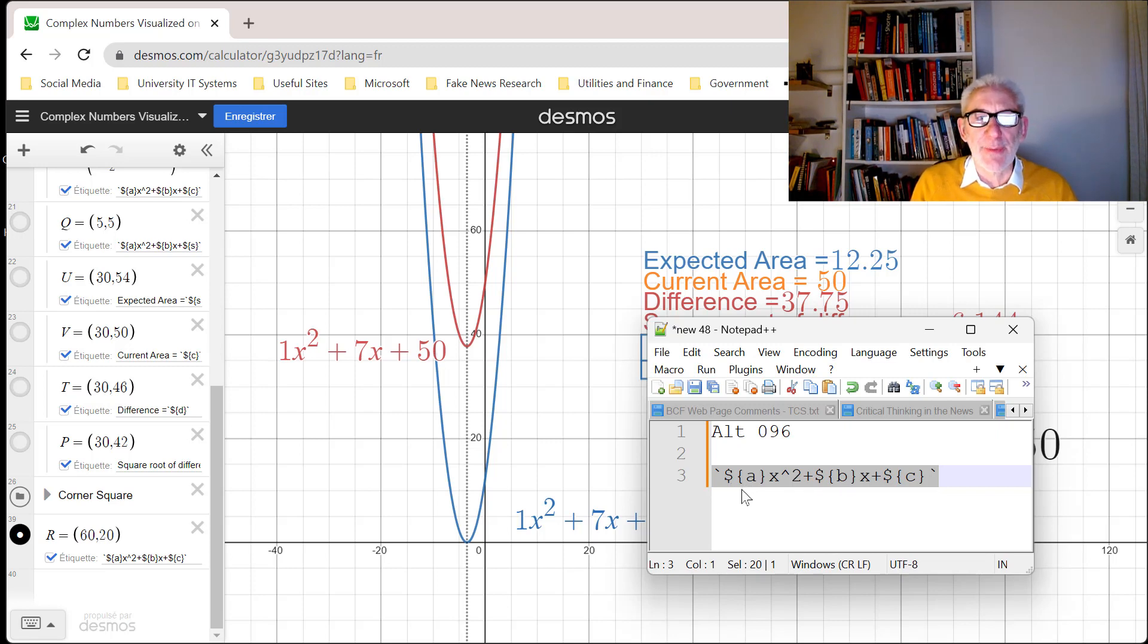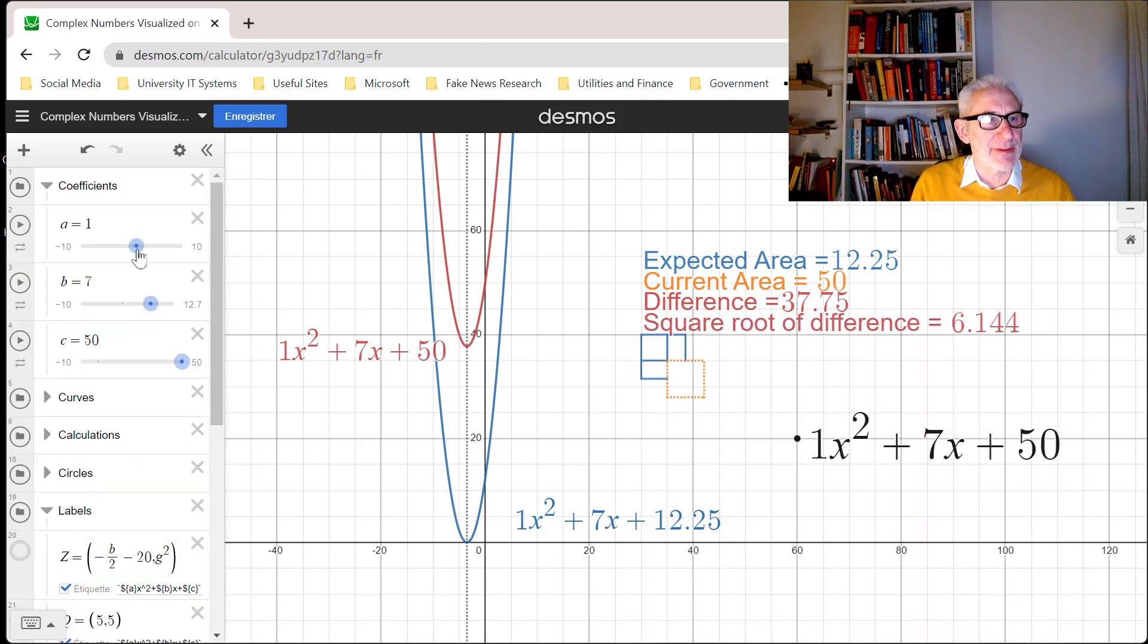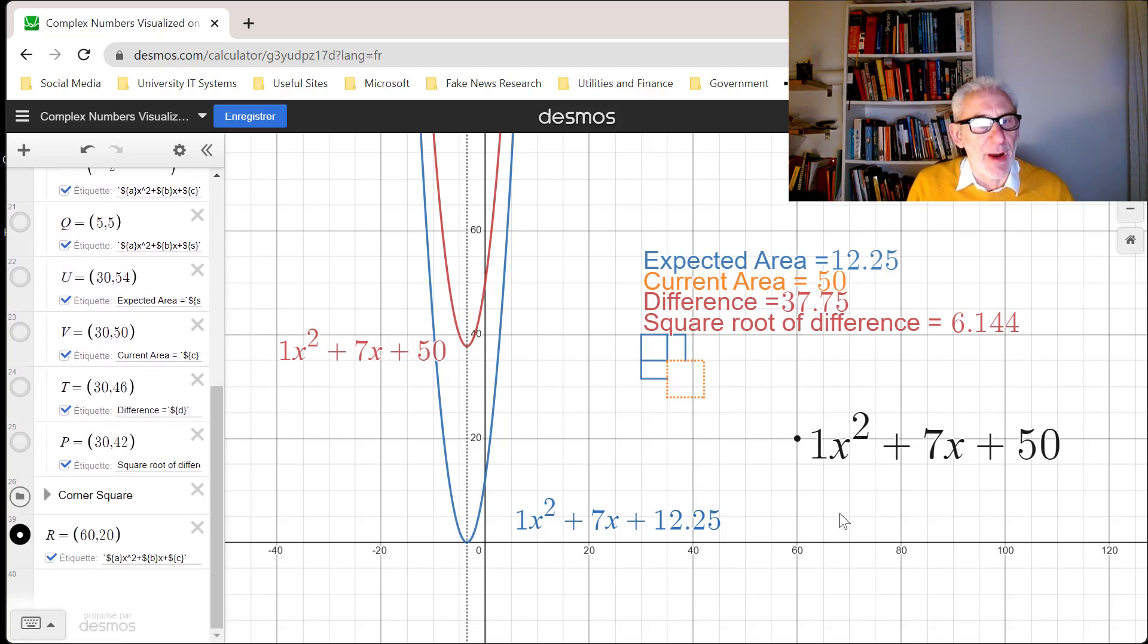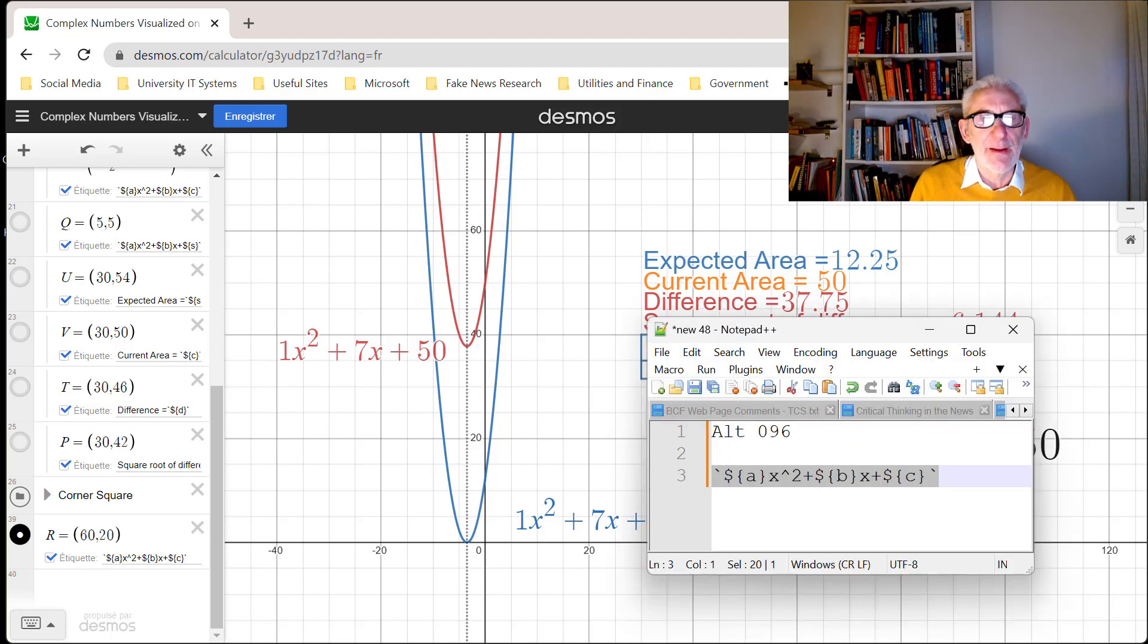Then a curly bracket, open curly bracket, then the label of the variable you want to track. In my case I've got three variables: a variable called a, a variable called b, and a variable called c. They're already written into my Desmos file, so I am tracking those variables.